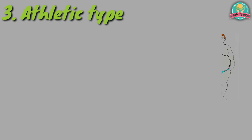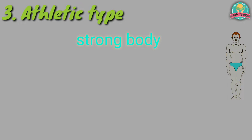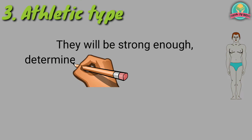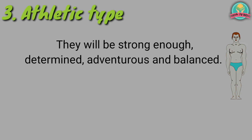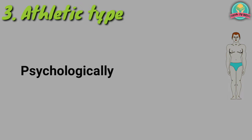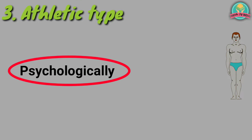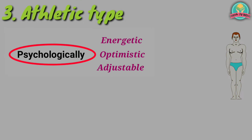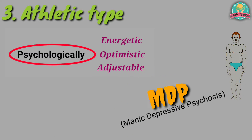Number 3: Athletic type. These people will have a strong body. They are more energetic and aggressive. They will be determined, adventurous, and balanced. They are comparable with ambiverts. Psychologically the athletic is energetic, optimistic, and adjustable. They are more prone to suffer from M.D.P.